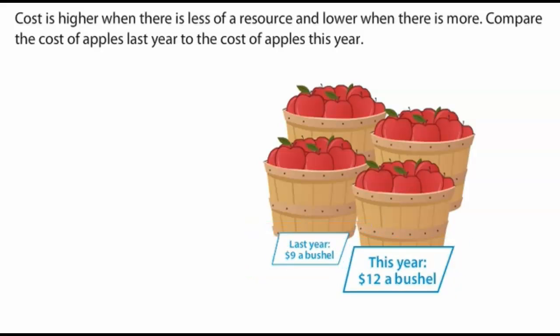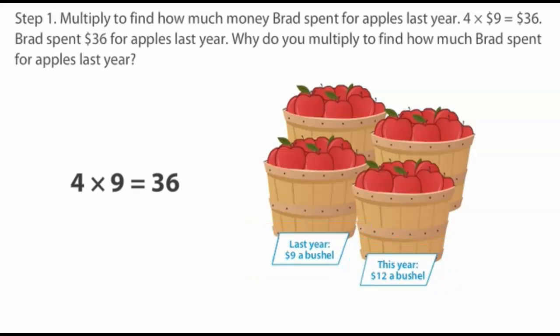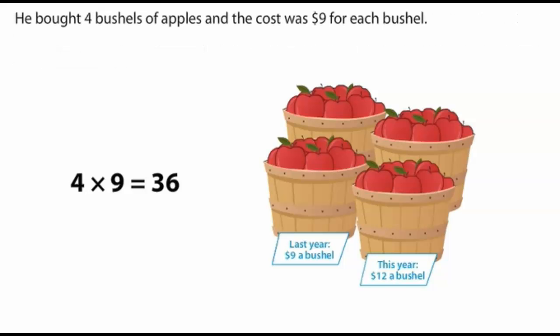Step one: multiply to find how much money Brad spent for apples last year. Four times nine dollars equals thirty-six dollars. Brad spent thirty-six dollars for apples last year. Why do you multiply? He bought four bushels of apples and the cost was nine dollars for each bushel.